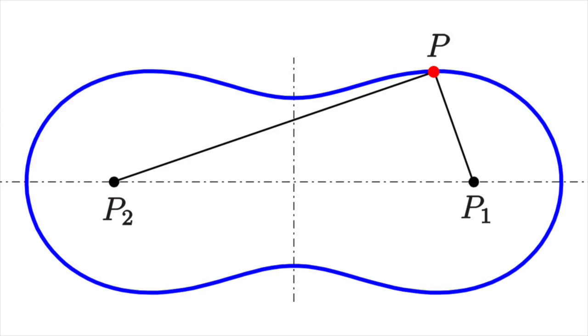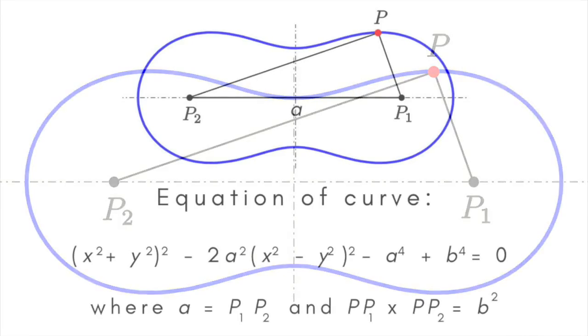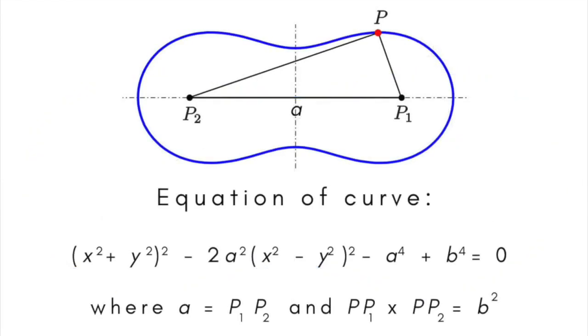Such that p p1 times p p2 equals b squared. The locus has the equation x squared plus y squared all squared minus 2a squared times x squared minus y squared all squared minus a to the fourth plus b to the fourth equals zero, where a equals p1, p2.